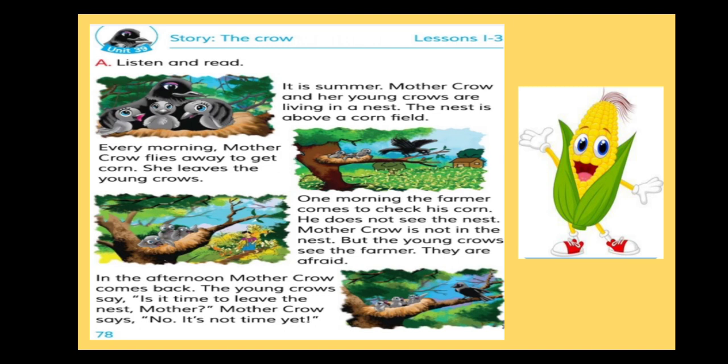The nest is above a corn field. Students, can you say what's a corn field? A corn field is a field where farmers grow corn. Can you say what time it is in the story? Yes, it's summer. Why do the crows live there? They live in a nest which is above a corn field.